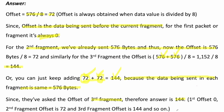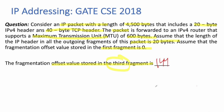To summarize: the first fragment has an offset of 0 because nothing was sent before it. The second fragment has an offset of 72, and the third fragment has an offset of 144. Keep adding 72 for each subsequent fragment to get its offset. Thank you for watching this video, I will see you in the next one.